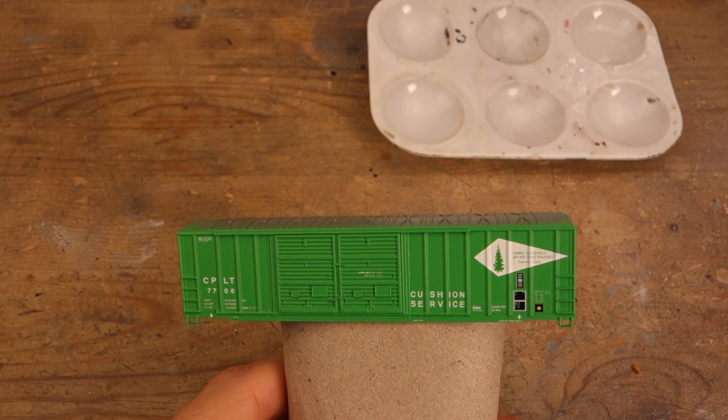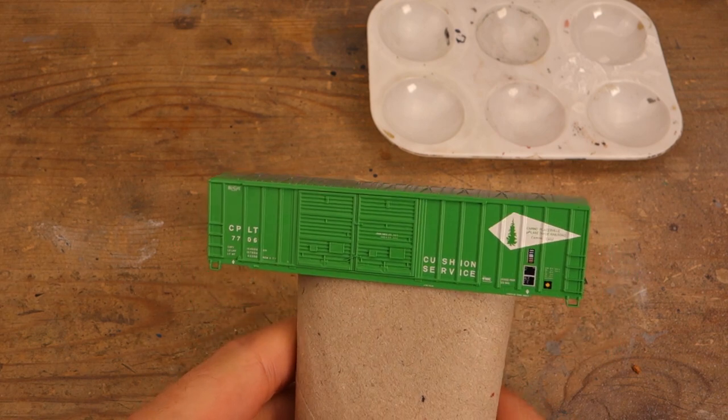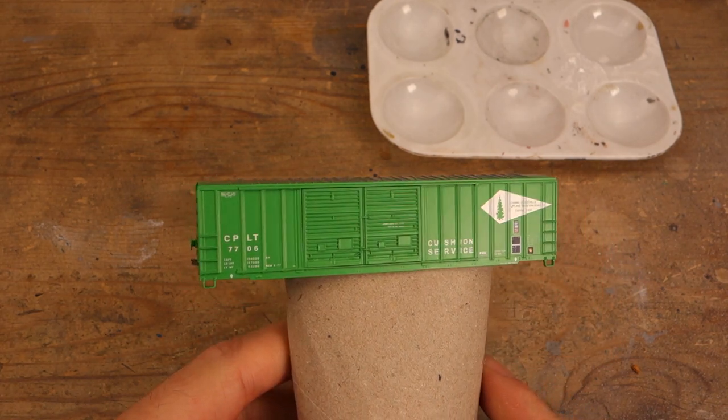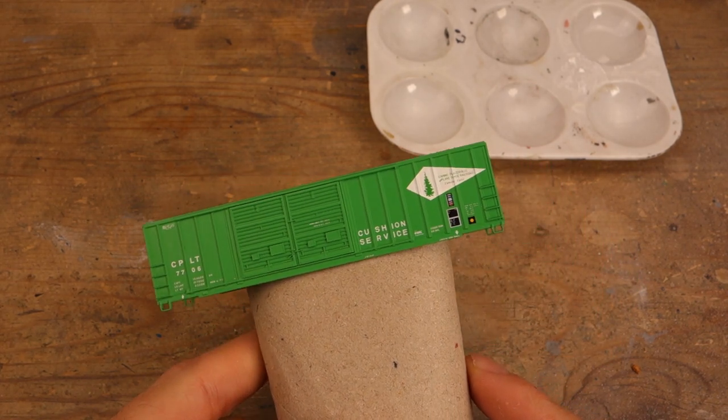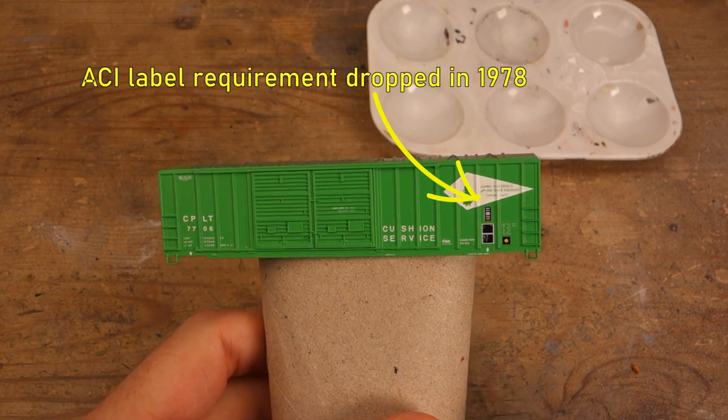I grabbed this car because it already came with body mounted couplers so I could just start without much preparation. I only added the era specific decals for the ACI labels and the yellow dot markings.